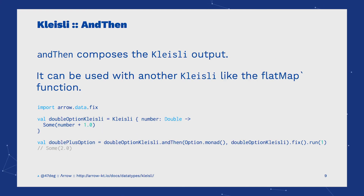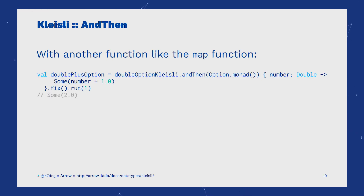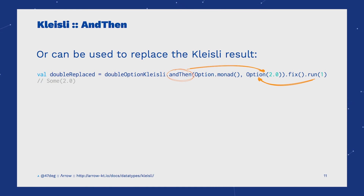The andThen function composes the Kleisli output. There are a few ways to use andThen: it can be used with another Kleisli, similar to flatMap, changing the output type and returning a new Kleisli with the new output type. Or it can be used to replace the Kleisli result — in this case we ignore the original Kleisli result and get the specified value instead. This is useful to change the result of one of our transformations and get a new result inside a new Kleisli.